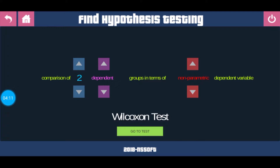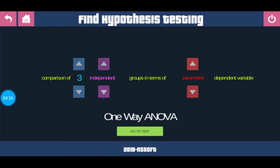Change the first option to 3 groups and now the test you will be using is the Friedman test. Change the last option to parametric — this gives you repeated ANOVA. Now change the second option from dependent to independent, and you will be using one-way ANOVA.